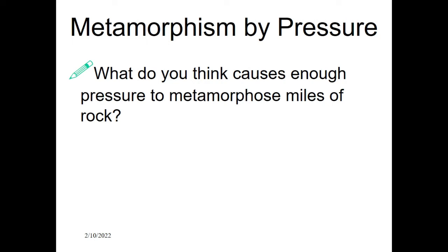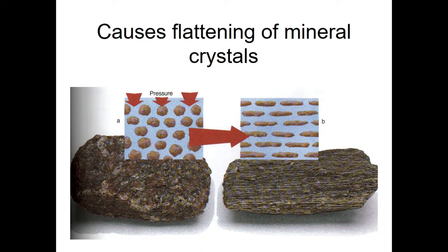Regarding metamorphism by pressure — here is an image showing a pre-existing rock known as a protolith undergoing structural deformation and reorientation of grains. In Figure A, the mineral grains are somewhat angular to sub-angular in appearance — for example, considering this as granite, the mineral grains of quartz along with feldspars, which are the essential minerals of granite, will undergo metamorphism and get oriented in the direction of the pressure.